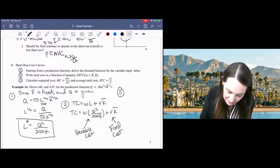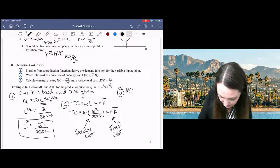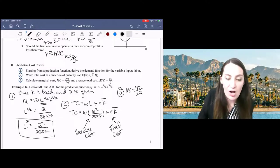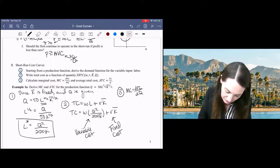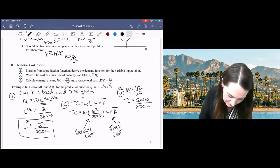And then using that total cost function, we can derive our marginal cost function and our average total cost function. Marginal cost will be the derivative of the total cost function with respect to Q. So I get 2WQ over 2500K. Oops, that's not that. That's my marginal cost.